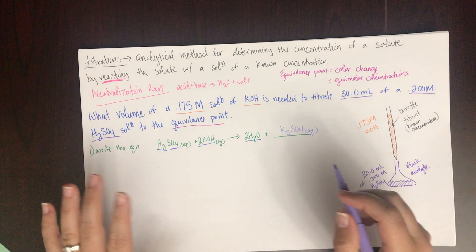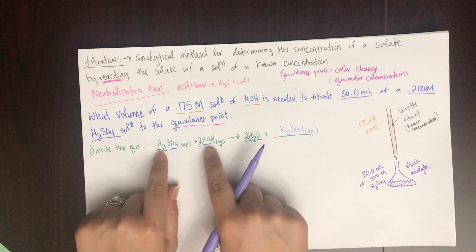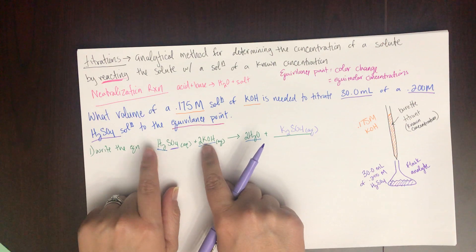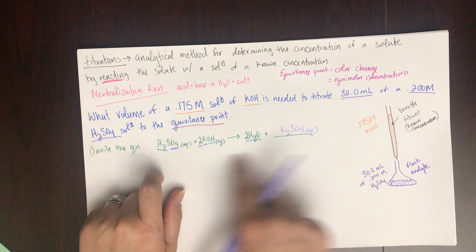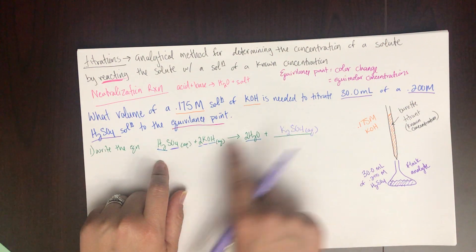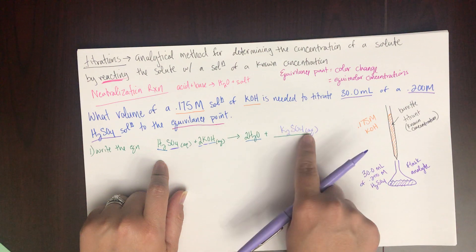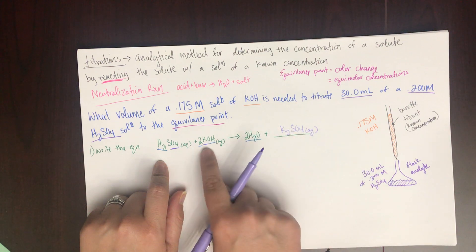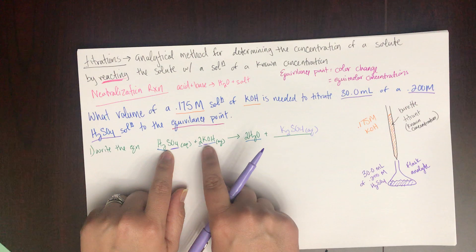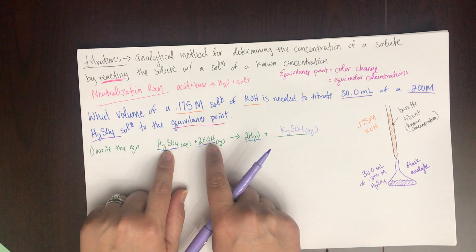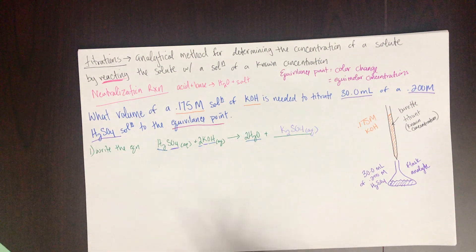Notice the 1-to-2 ratio in this reaction: at the equivalence point, for every mole of sulfuric acid you'll have twice as many moles of potassium hydroxide.